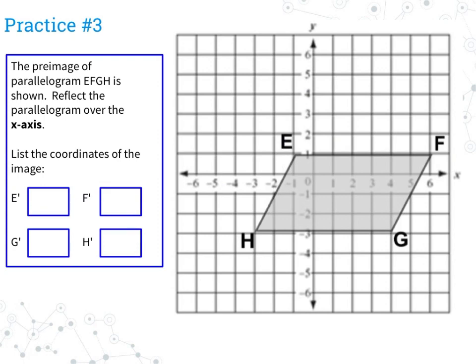Let's have you try another practice problem. Practice number 3 says the pre-image of the parallelogram EFGH is shown — reflect the parallelogram over the x-axis and list the coordinates of the image. You can use the graph or remember the rule and list the coordinates. Pause the video now, then press play again to see if you are right. How did you do? You either had to figure out the original points and make the changes, or you did the counting method and then wrote those points down.